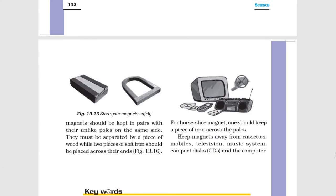To keep them safe, bar magnets should be kept in pairs with their unlike poles on the same side. They must be separated by a piece of wood while two pieces of soft iron should be placed across their ends. Figure 13.16 shows store your magnets safely.